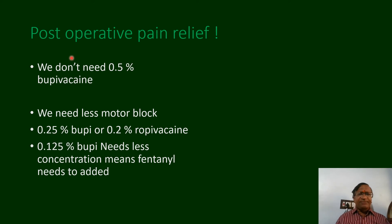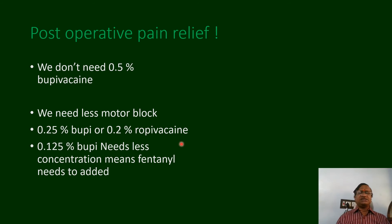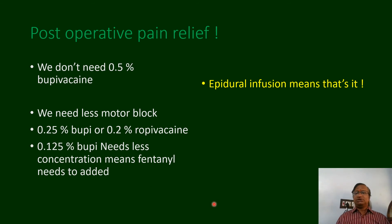For post-operative pain relief we don't need 0.5% — we need less motor block. 0.2% ropivacaine is ideal; if you come down to 0.125% you need to add fentanyl. That is the principle of epidural infusions.